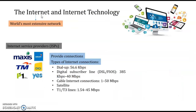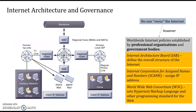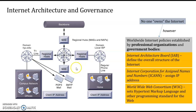Internet architecture and governance — what we call internet architecture is usually a plan: a plan for the network, a plan for the organization. When they apply the internet, they must have the architecture of the internet — they need to know which devices we have, what our backbone is, our original host, our hub, and our local domain.